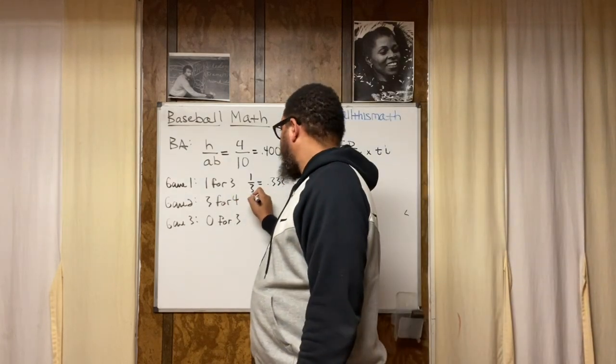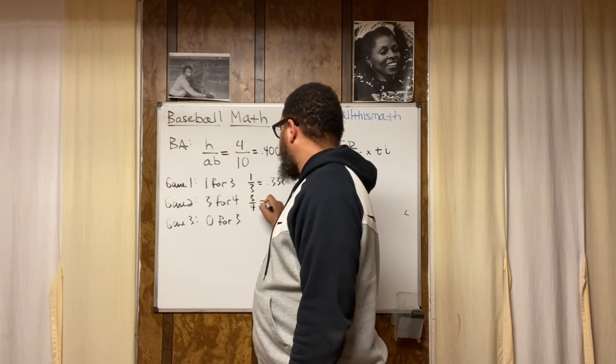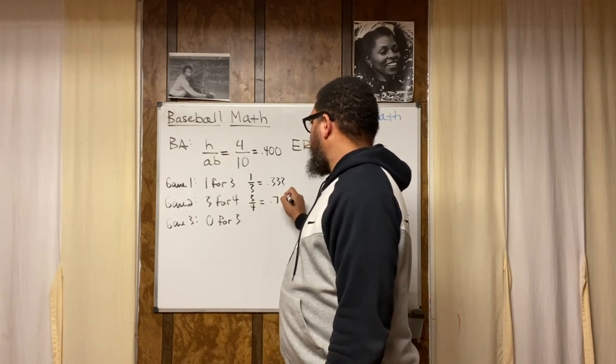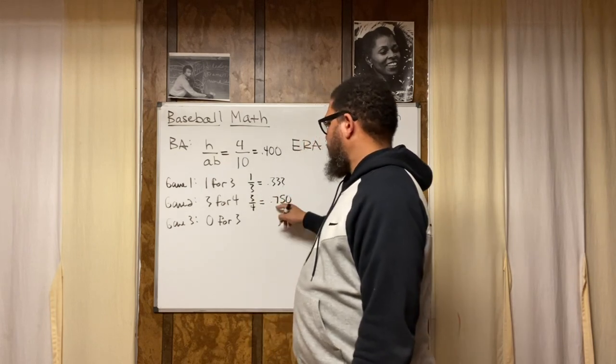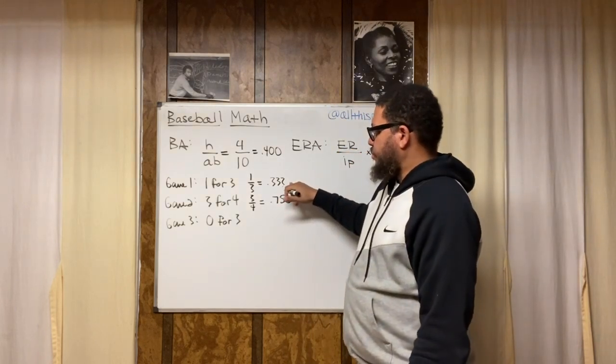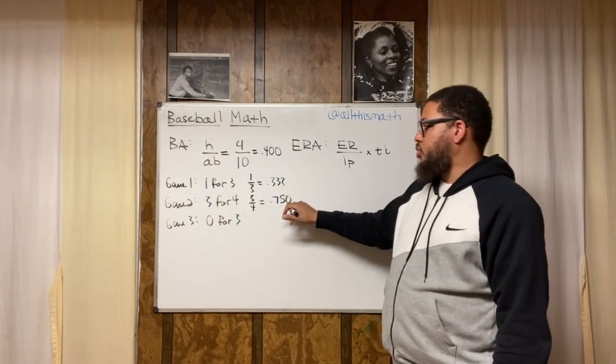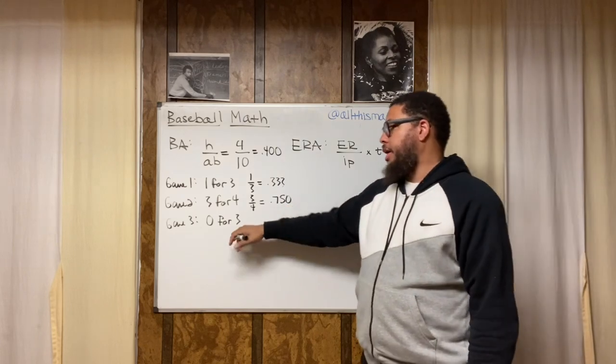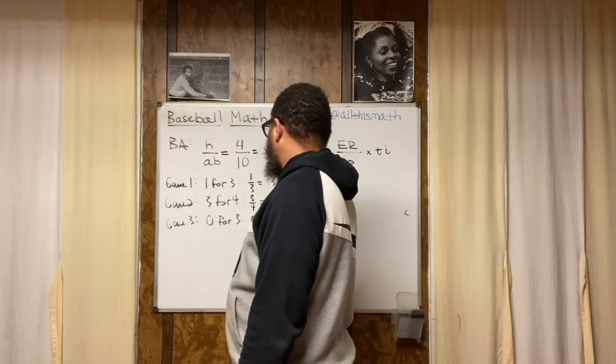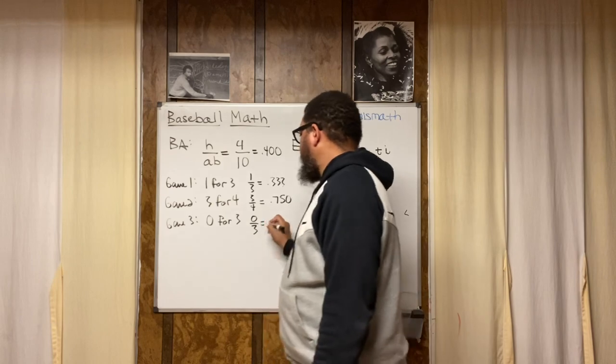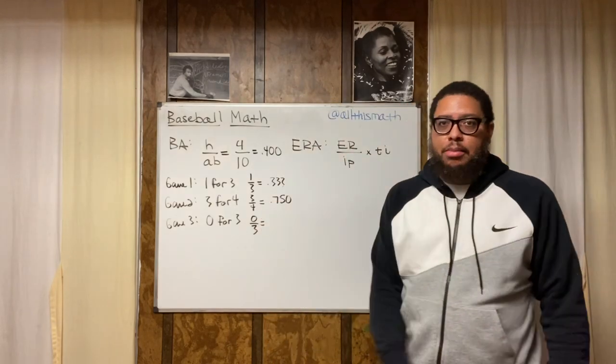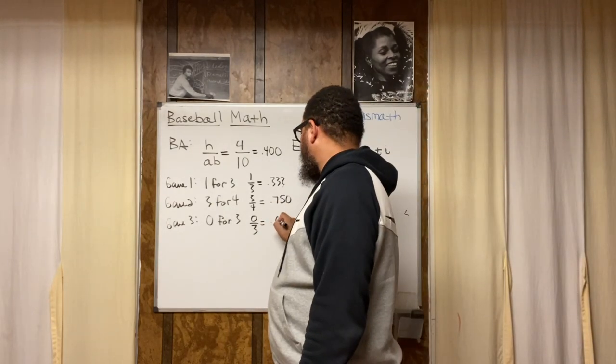Now for game two, that would be three divided by four, which would be 0.750. So in game one, you hit 333. In game two, you hit 750. And in game three, that's going to be zero over three. And we know that anytime you divide zero by any number, you just end up with zero. So for that game, you had a batting average of zero.